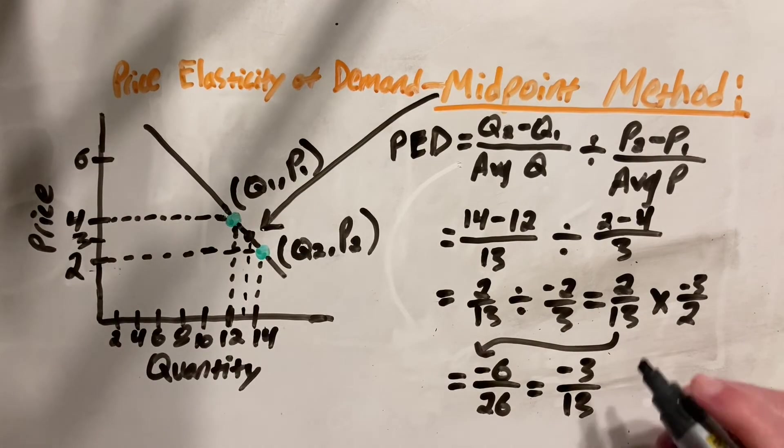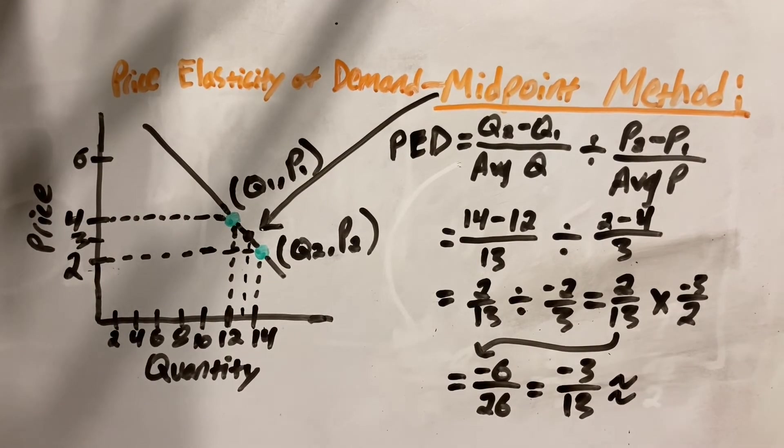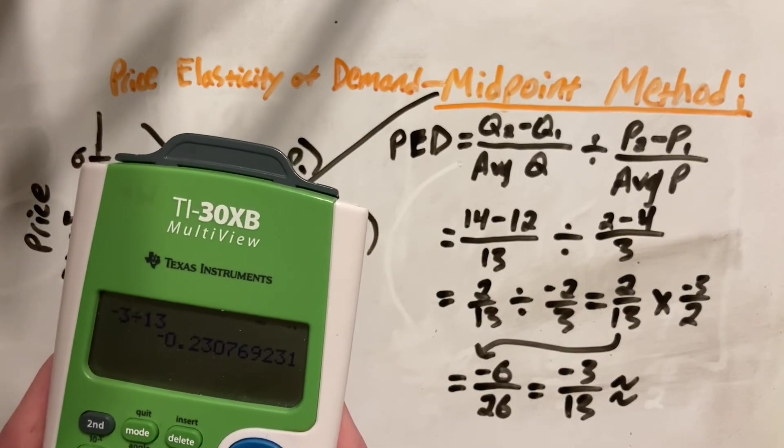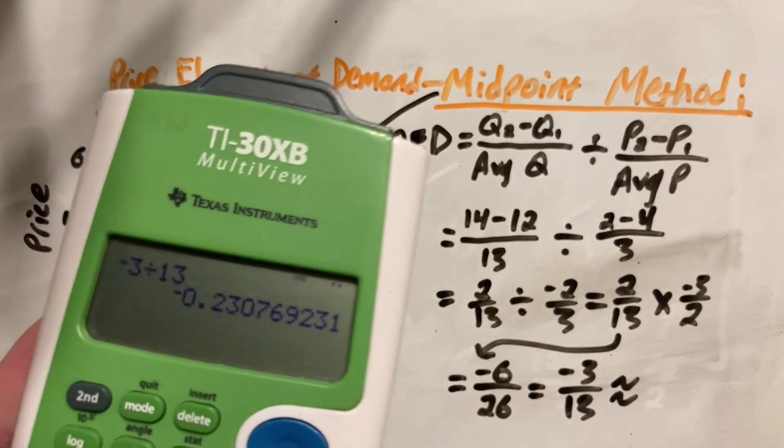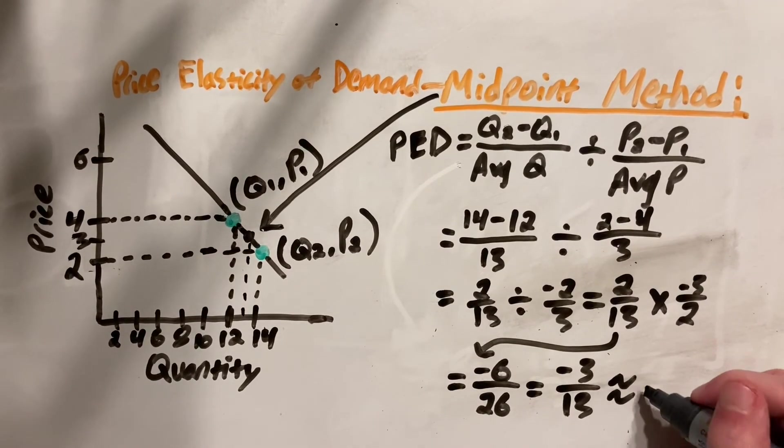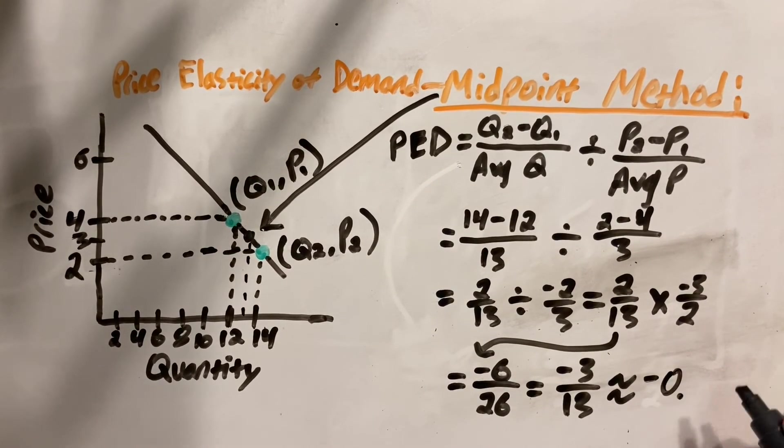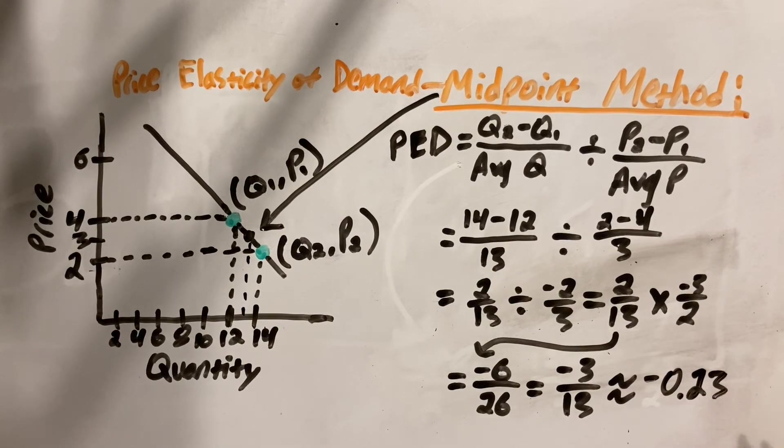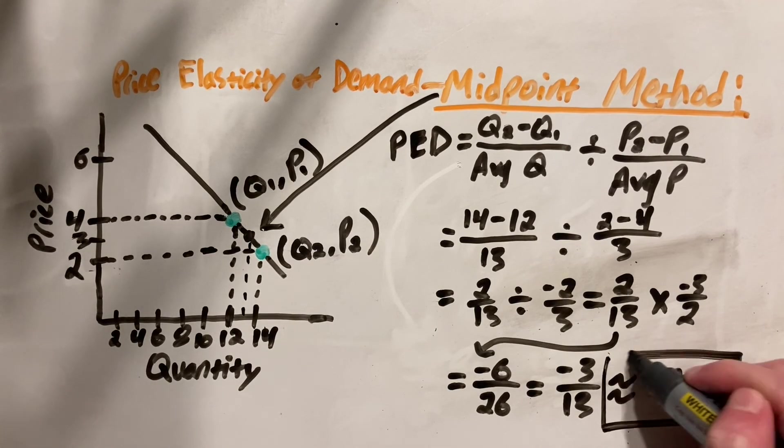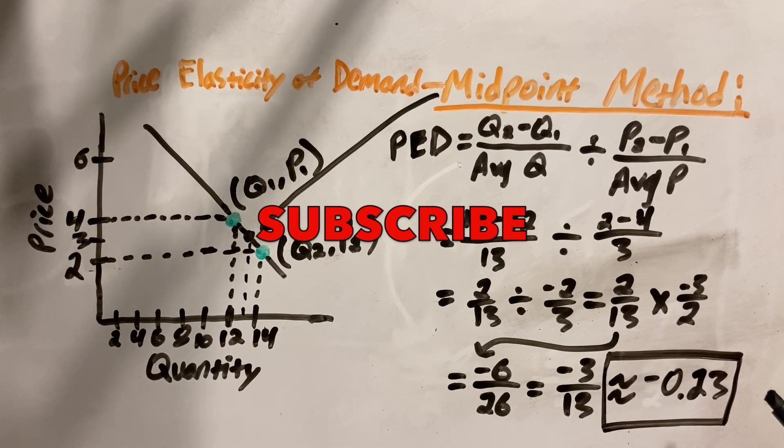And if we use a calculator, we can convert that to a decimal, giving us our price elasticity of demand to two decimal places to be negative 0.23. And that's how you find the price elasticity of demand using the midpoint method. I hope you found this video helpful. And if you did, please consider liking and subscribing to my channel. Thanks for watching and I'll see you later.